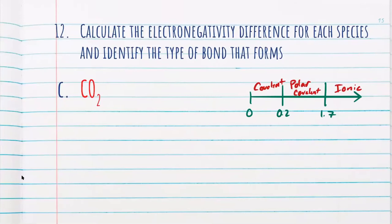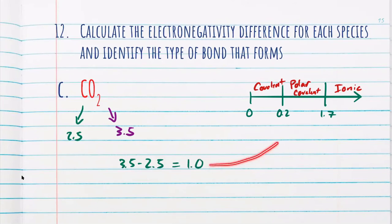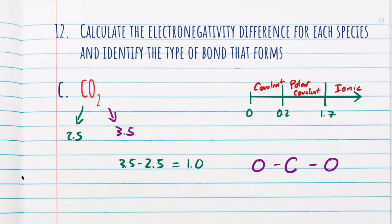Here we have carbon dioxide (CO₂). Carbon has an electronegativity of 2.5, while oxygen has an electronegativity of 3.5. Finding the difference — 3.5 minus 2.5 — we get 1.0. While our chart might say this is a polar covalent bond, when we draw out the molecule — carbon with oxygen on each side — carbon is being pulled equally on both sides. So it is not a polar bond; it's simply a covalent bond. Remember, our chart is only an estimation, and once we get into VSEPR models this will make more sense.